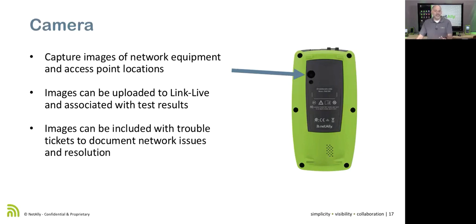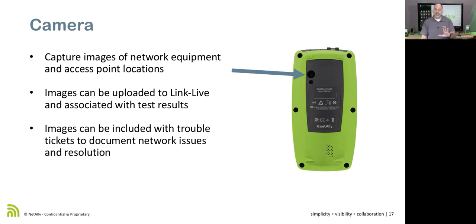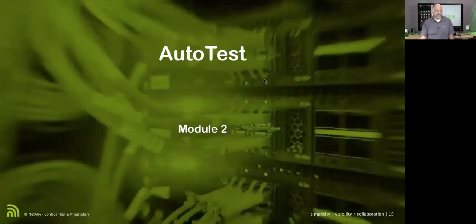If I go out and do a test and confirm an AP is ready to go, I could take a picture of where that AP is located and upload it. This tool is used for both network validation and troubleshooting — in validation mode, the camera documents the network; in troubleshooting mode, I can tie a trouble ticket number to a test result and attach a picture, bringing all that information together.